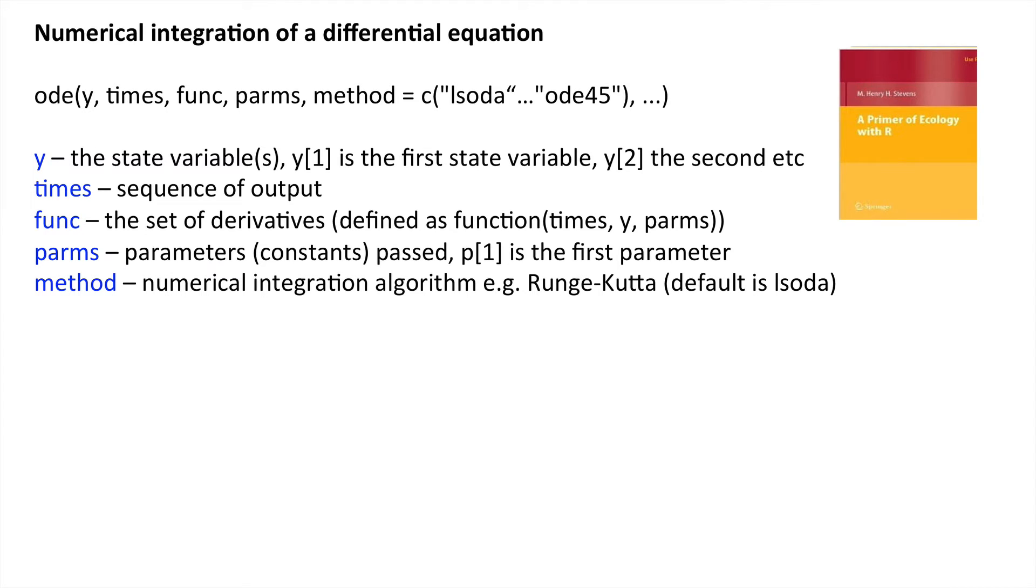Y gives the state variables. These are the dynamical variables that we're seeking to integrate. Sometimes it may be simply a matter of population size of one particular species that we're interested in. Or it could be several species. Or, of course, it could be some other rates of change.